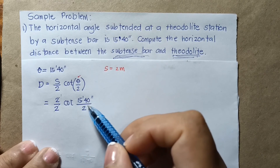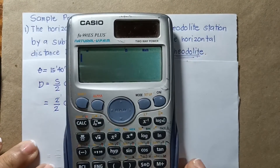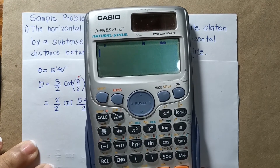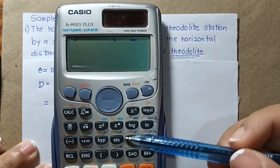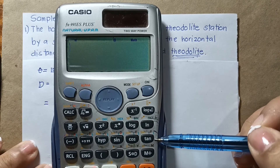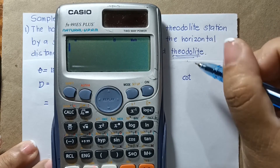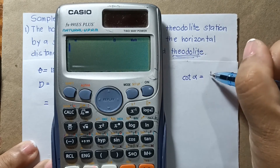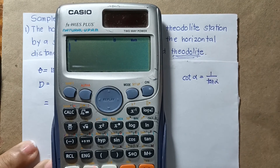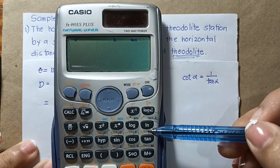Now, how do we use the calculator to get the cotangent function? If we look at the calculator, we have sine, cosine, and tangent keys — there is no cotangent key. However, we know that cotangent of an angle is equal to 1 over tangent of that angle. So we will use a fraction. Do not use the tan⁻¹ key, because that is the inverse trigonometric function.